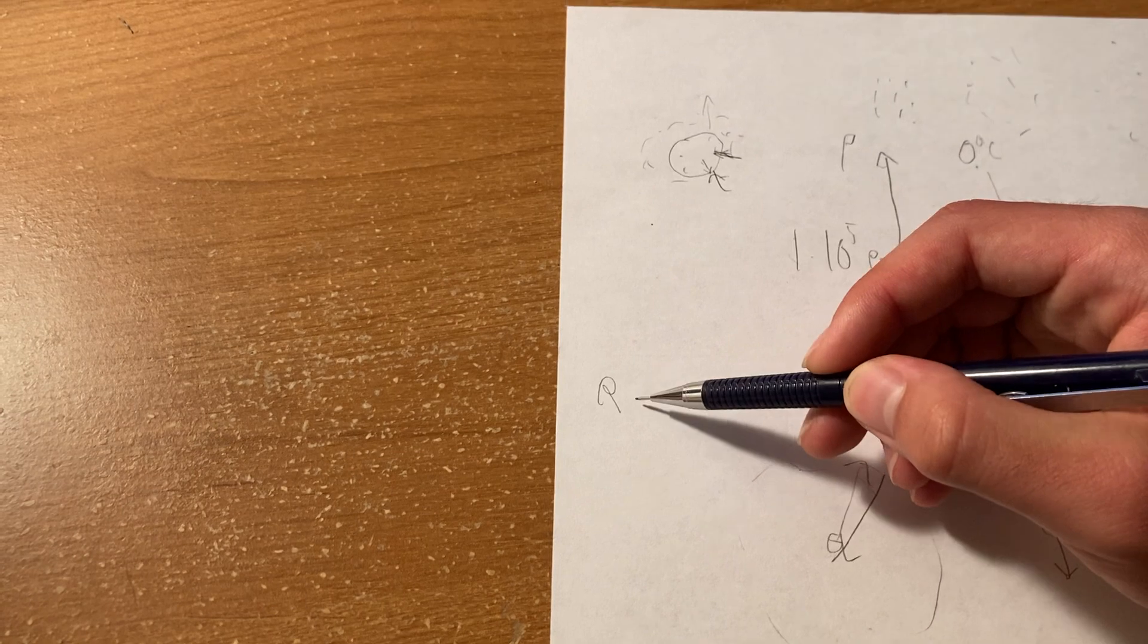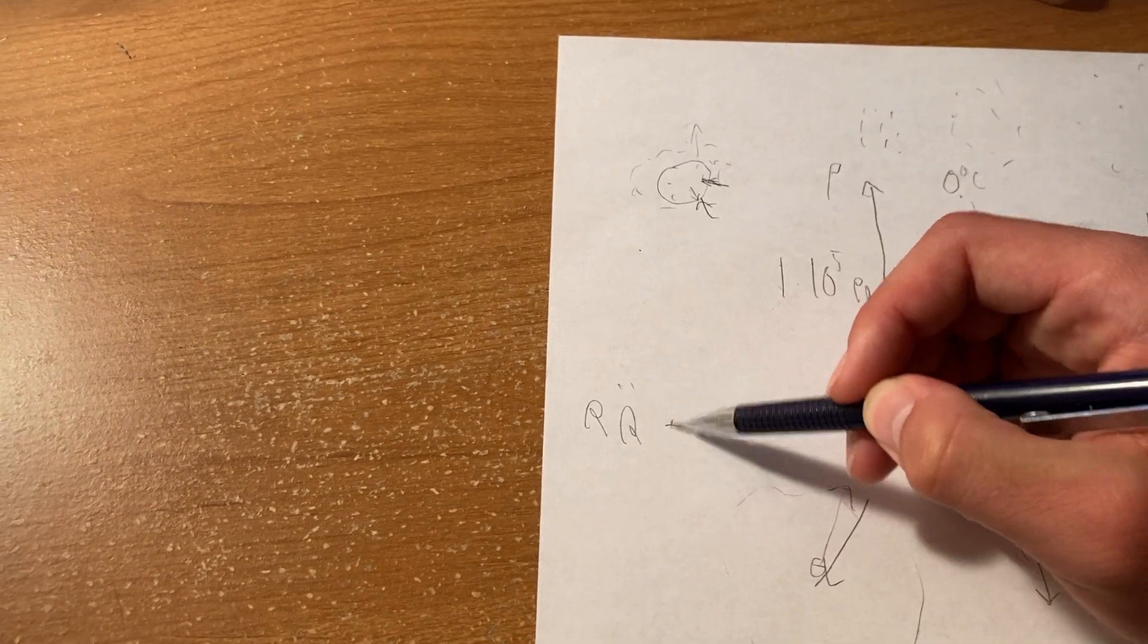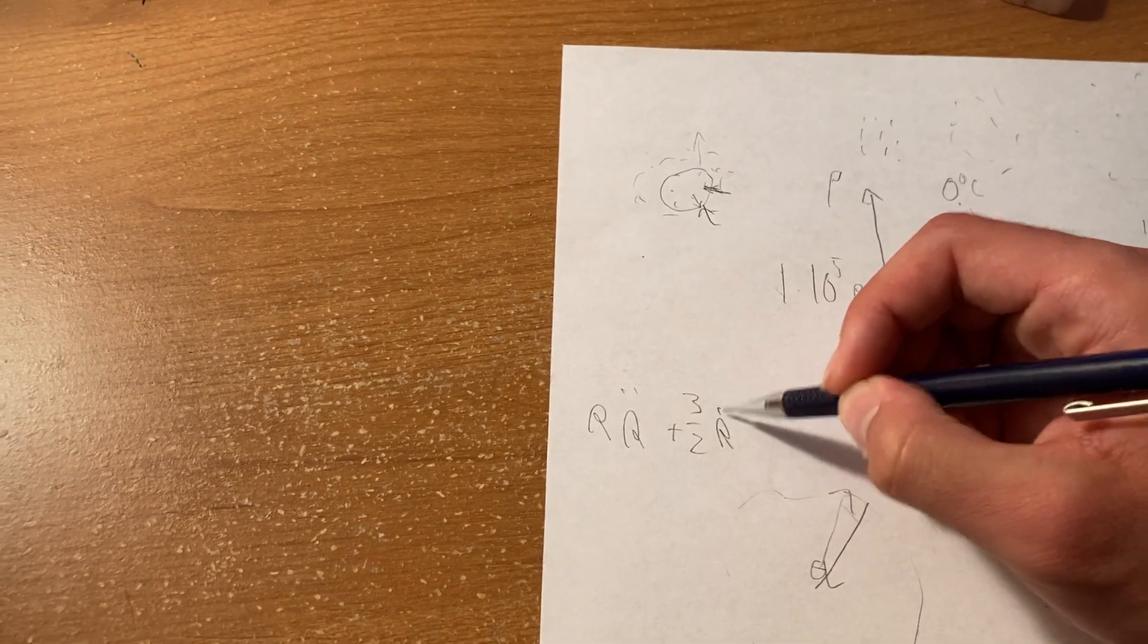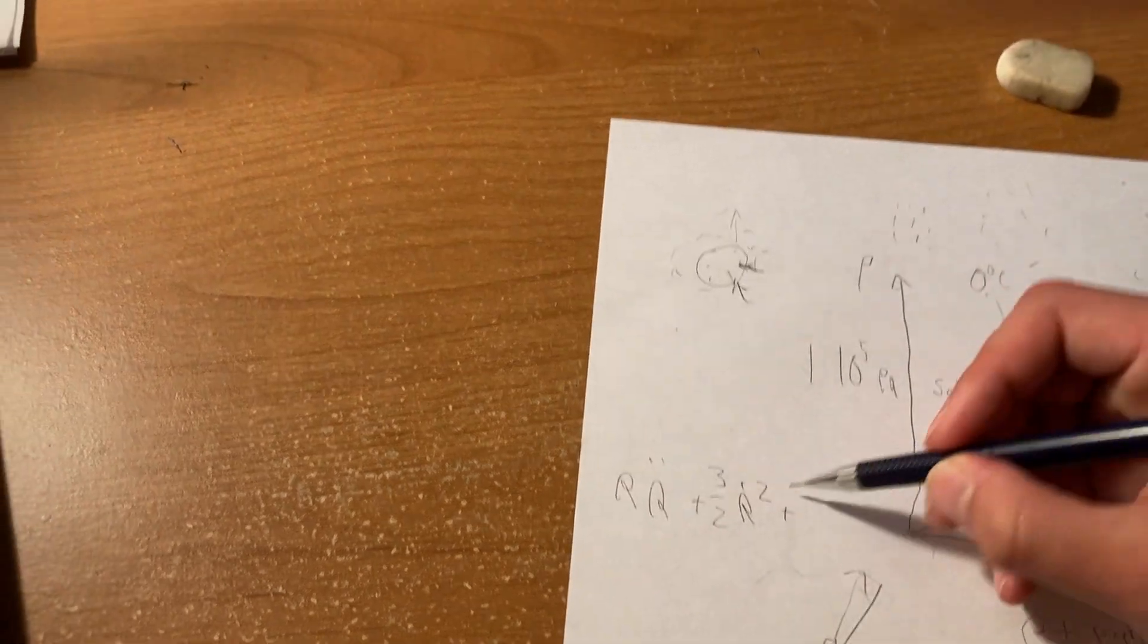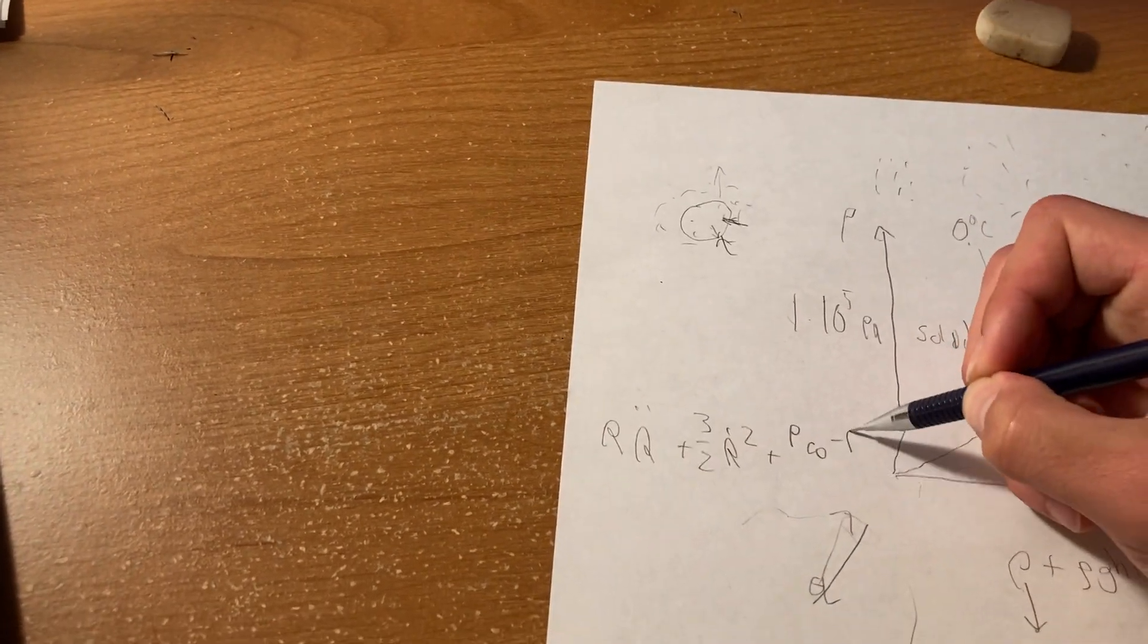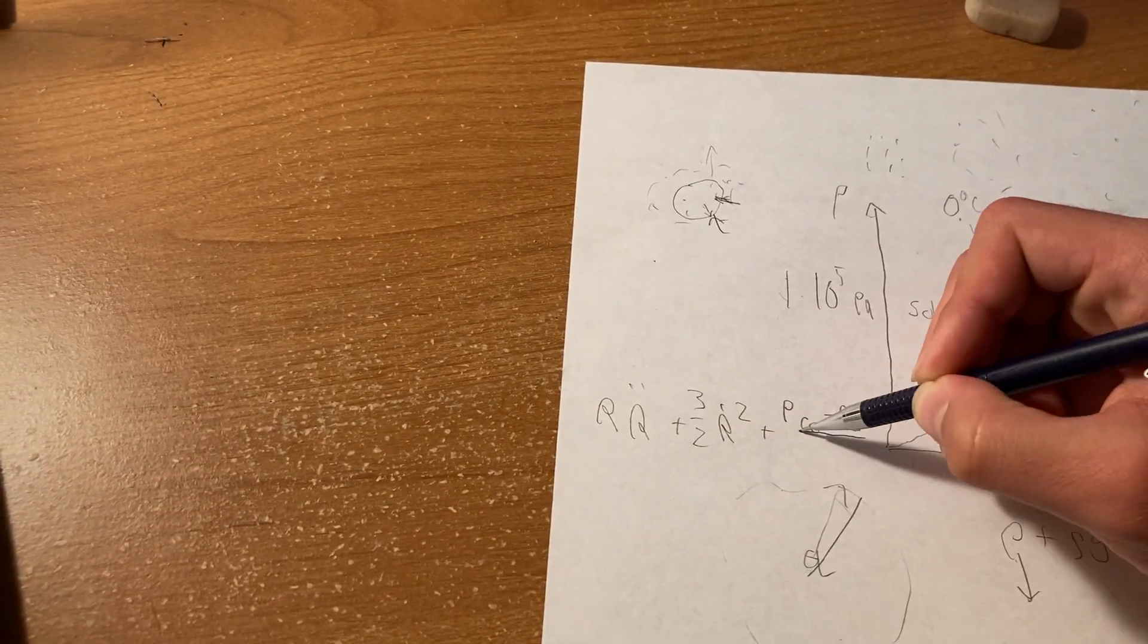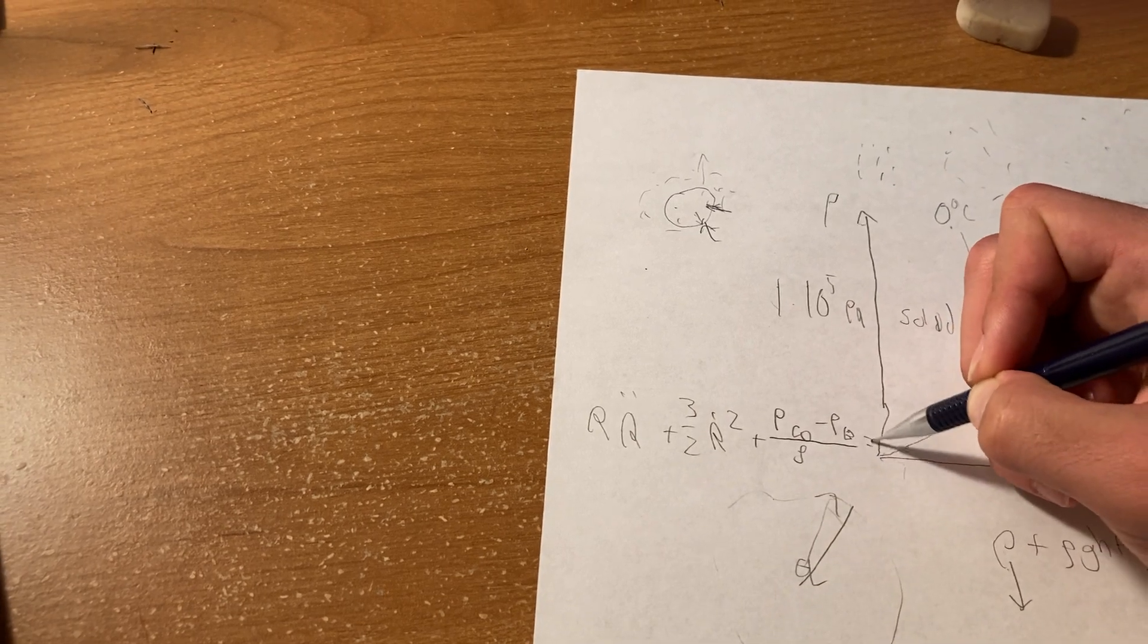So what is the Rayleigh-Plesset equation? It looks like R R double dot plus 3 over 2 R dot squared plus P sub infinity minus P sub B over rho is equal to 0.